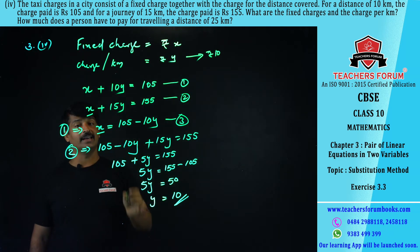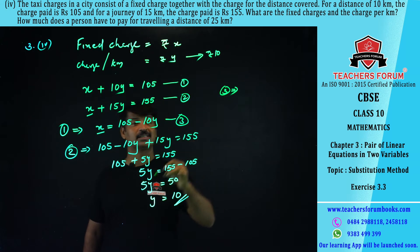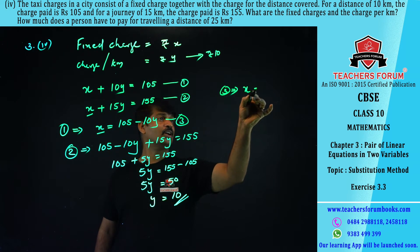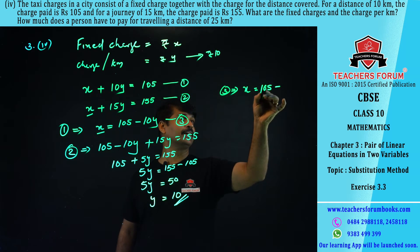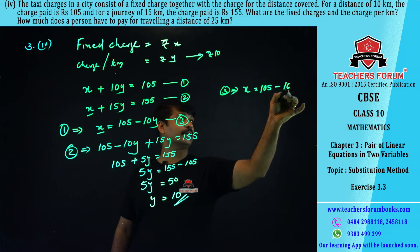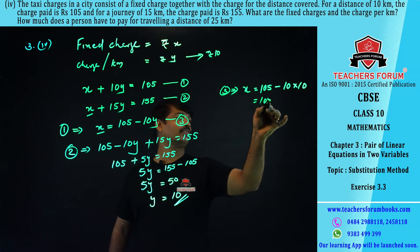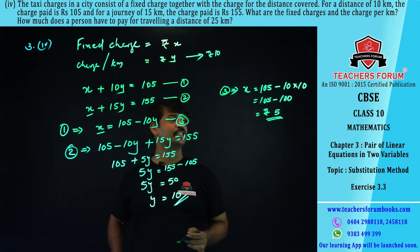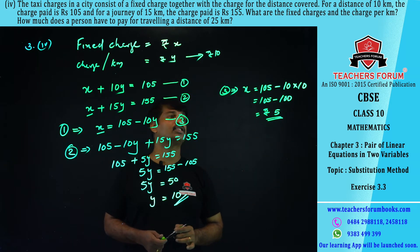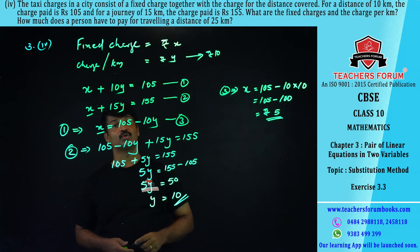Substituting y = 10 into equation number three: x = 105 − 10 × 10 = 105 − 100 = 5. So the fixed charge is rupees 5 and the charge per kilometer is rupees 10.